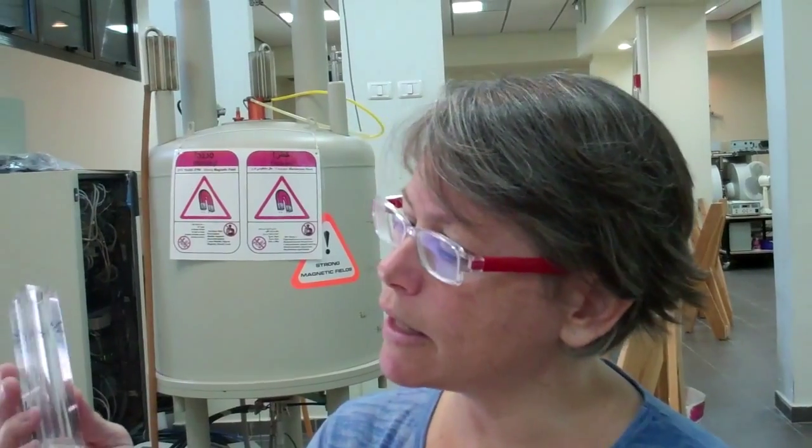To insert the sample, number three on the instruction list, we'll need a depth measure and a spinner. There's a marking here for five millimeter outer diameter NMR tubes. That is the size you should be using. This black line marks where the coil is located inside the instrument.